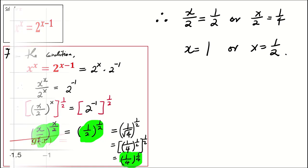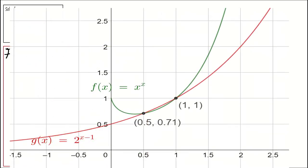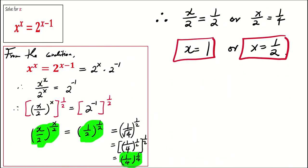By examining the graphs of y equals x to power x and y equals 2 to power x minus 1, we observe that there are two distinct intersection points. Therefore, we confirm that the solutions to this problem are x equals 1 and x equals half.